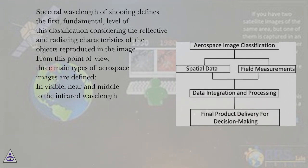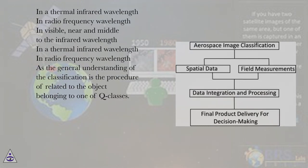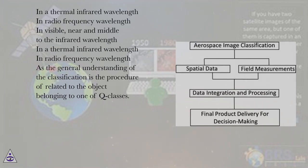From this point of view, three main types of aerospace images are defined: in visible, near and middle to the infrared wavelengths; in a thermal infrared wavelength; and in radio frequency wavelengths.